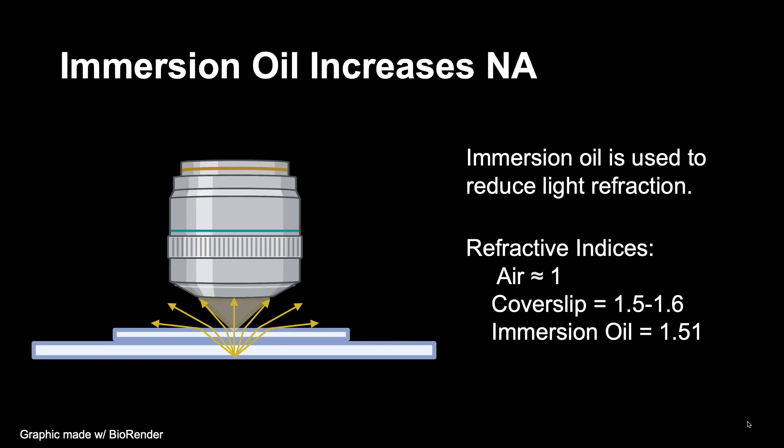Immersion oil reduces light refraction so that more angles of light from the specimen reach the objective lens. What this means is that when light must travel up from the coverslip into a medium with a different refractive index, such as air, the light path will bend at the borders between these two mediums.